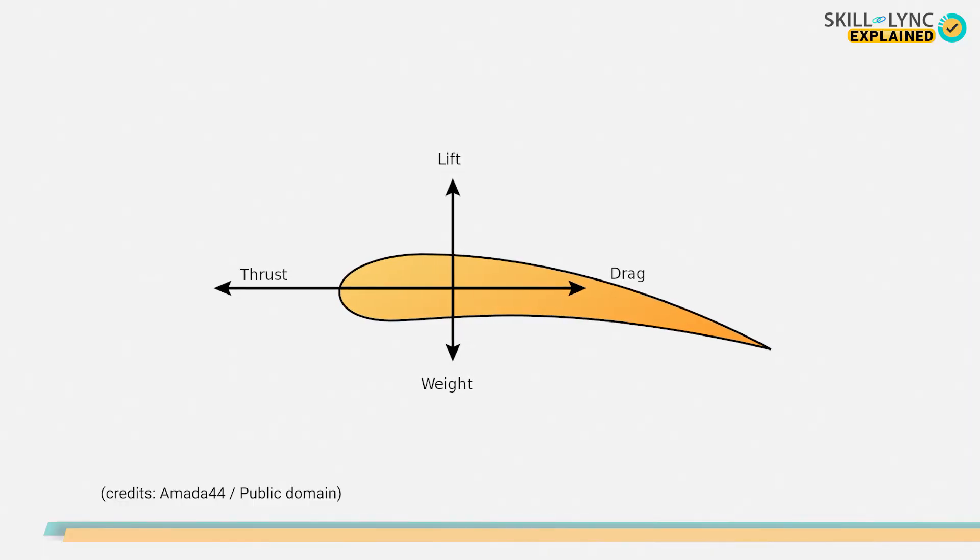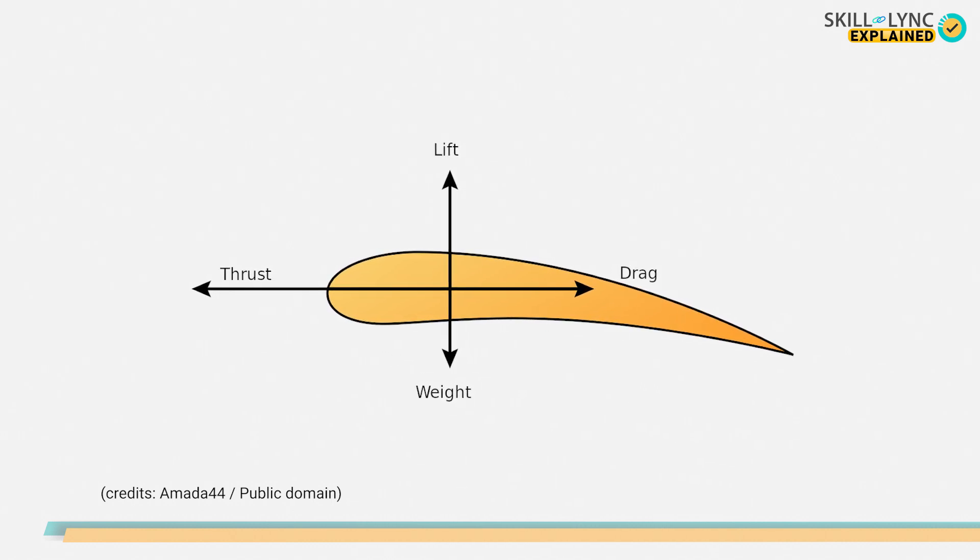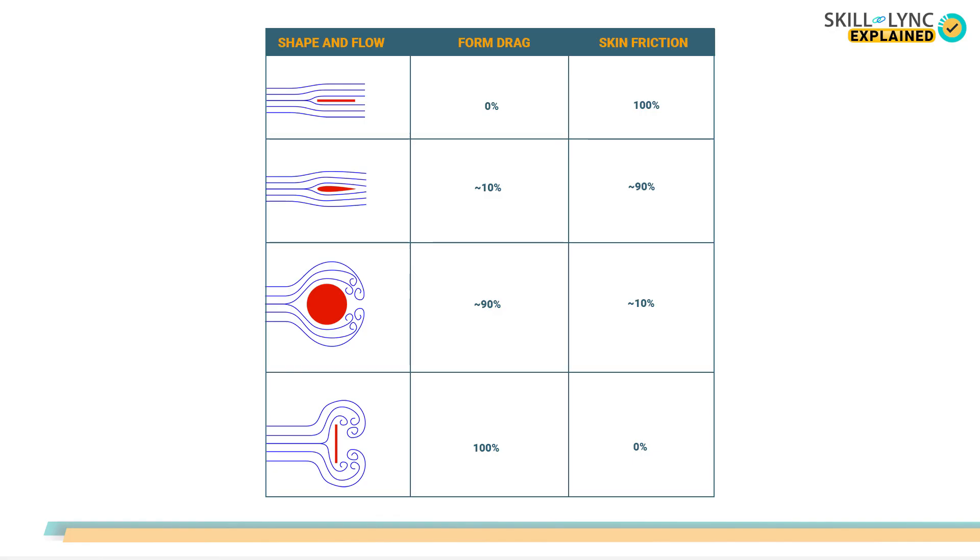Aerodynamics is needed to reduce the drag on the bodies moving through fluids. The lesser the drag on the bodies, the easier will be the movement. This drag is a force that acts opposite to the relative movement of a body in a fluid. The more streamlined a body is, the lesser will be the drag force experienced by it.